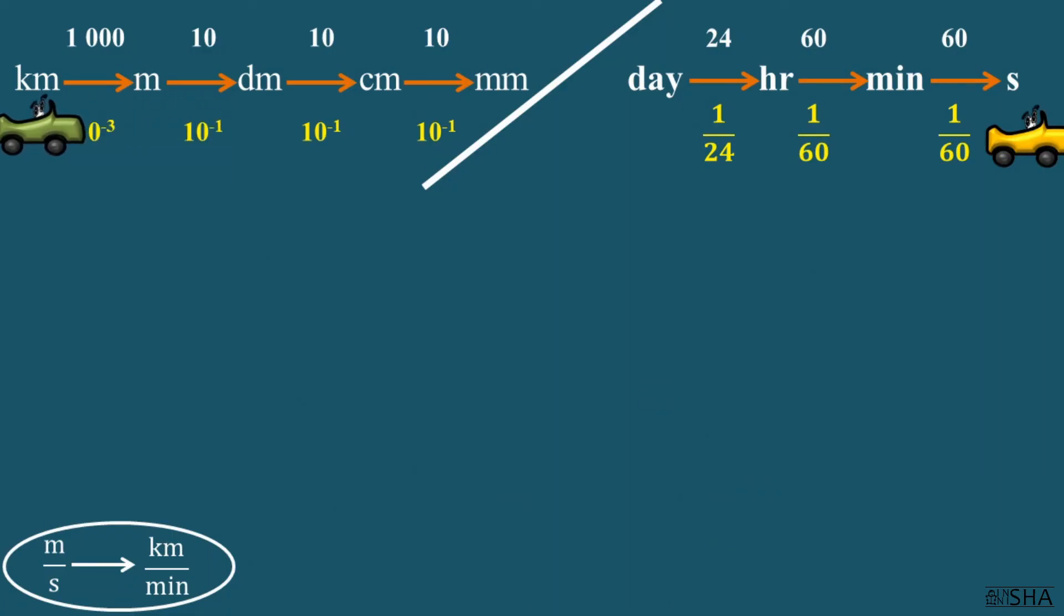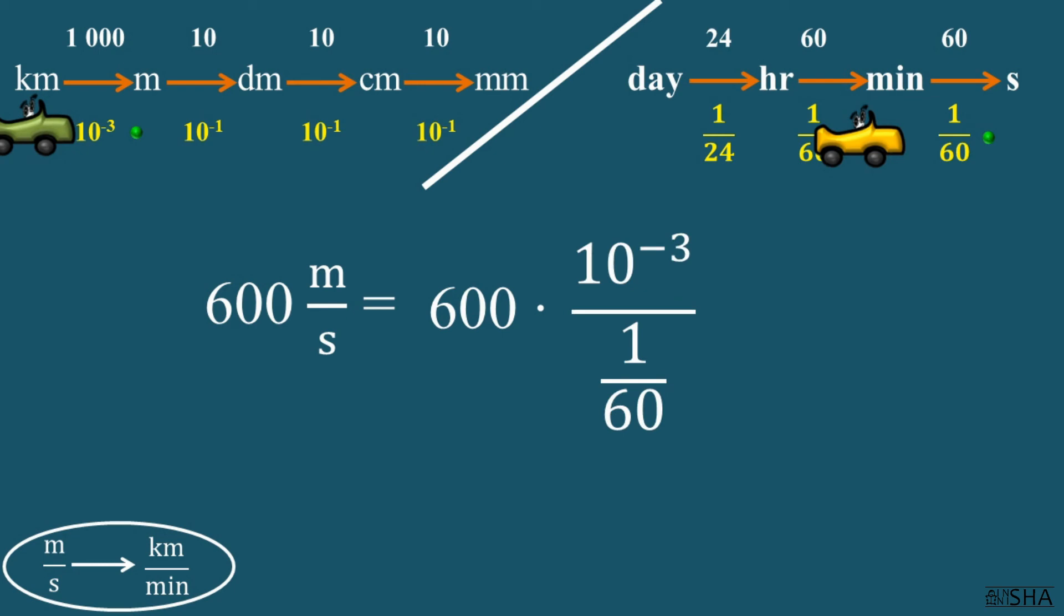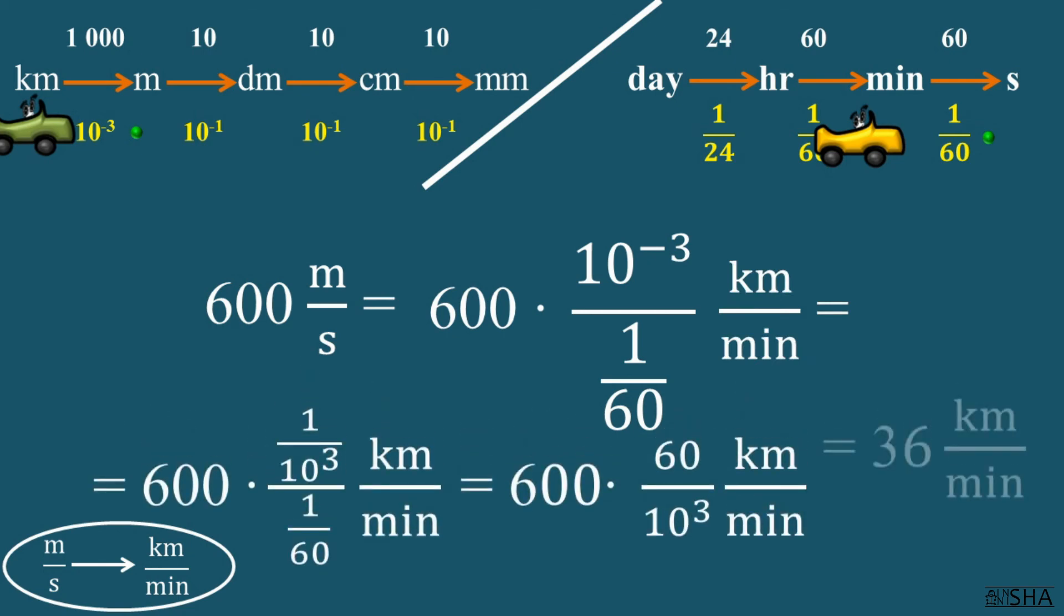Now let's convert 600 meters per second to kilometers per minute. To do this, in the numerator of the fraction, meters need to be converted to kilometers. That is why we multiply by 10 to the negative third power. And in the denominator, seconds need to be converted into minutes. Recall that a second equals 1 over 60 of a minute. We do some magic and get 36 kilometers per minute.